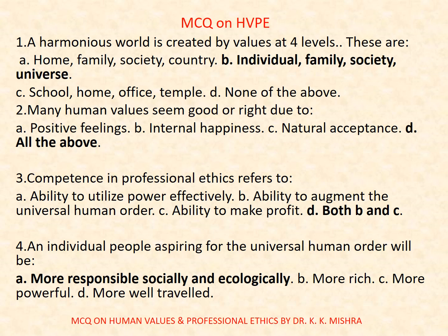Question number one: A harmonious world is created by values at four levels. Options are: A. Home, Family, Society, Country. B. Individual, Family, Society, Universe. C. School, Home, Office, Temple. D. None of the above. Correct option is B: Individual, Family, Society, and Universe.